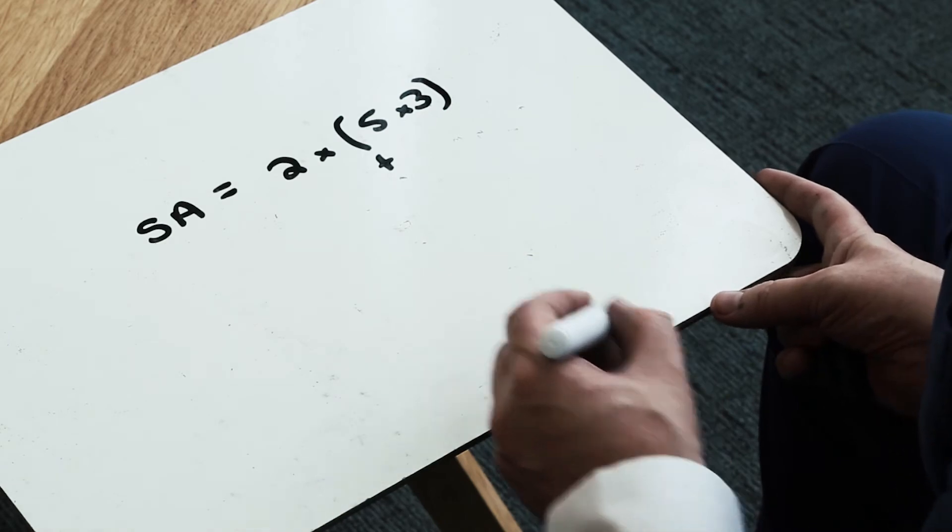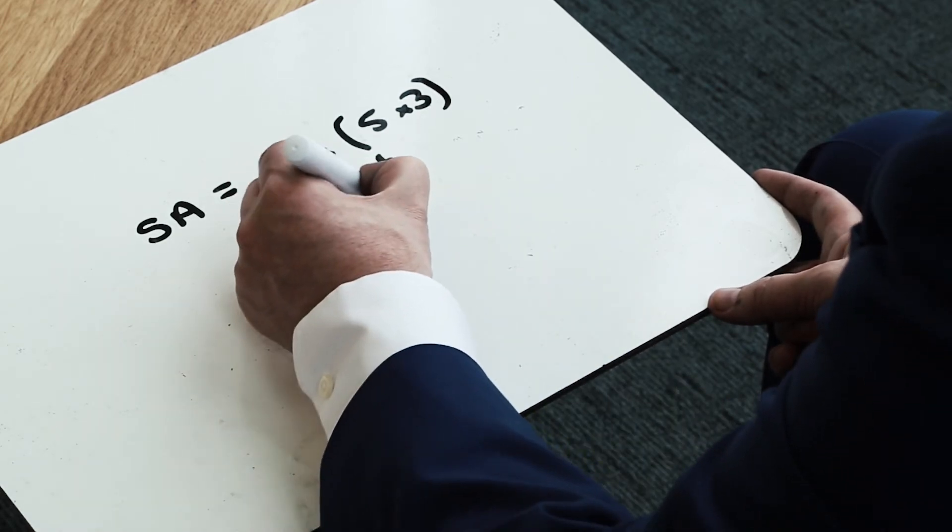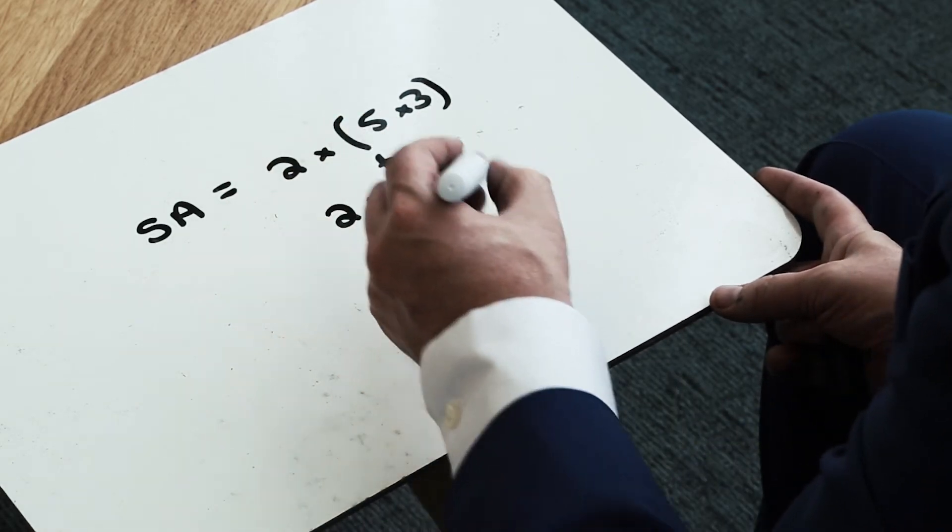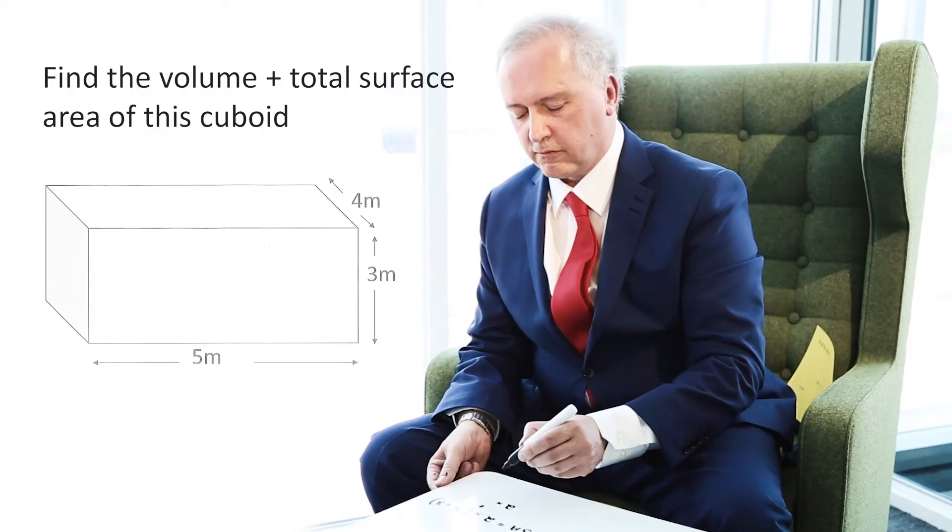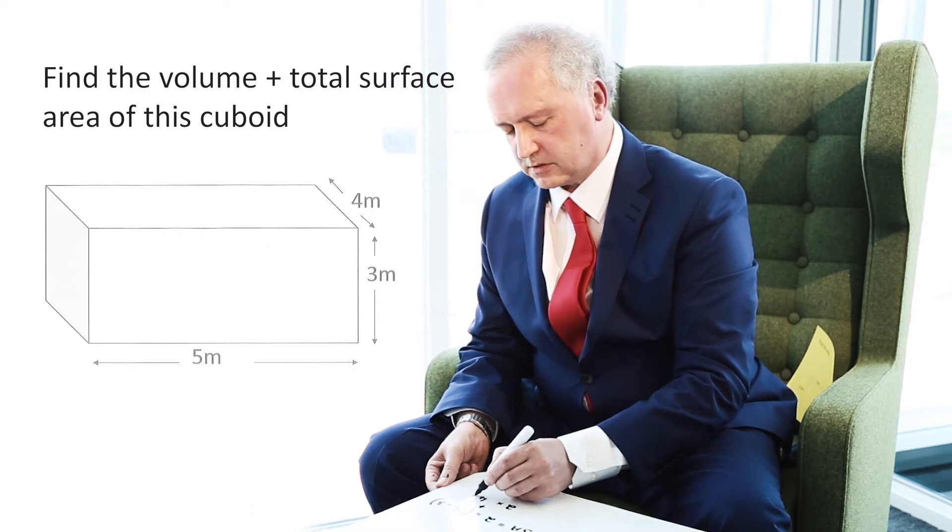Then I'm going to add two other faces. And if I look at the ends here, I can see that the area of the ends is actually equal to 2 times 4 times 3.